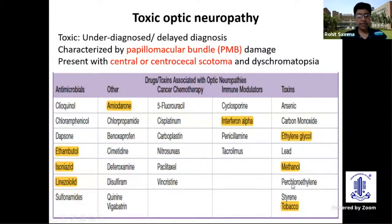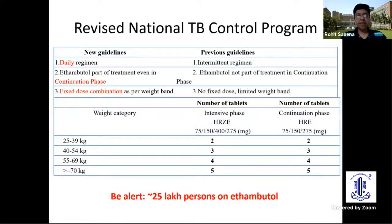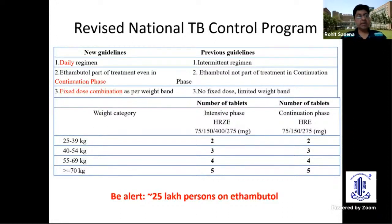The other important one is, of course, alcohol-induced, which I'll just touch upon, but mainly I'll be talking about tuberculosis-related. This has become important because we've recently had the revised national TB control program where the guidelines have changed and it's now a daily regimen. Ethambutol is also a part of the continuation phase. There are fixed dose combinations as per the weight band, and although the weight band tends to decrease the risks, because they are in combination, stopping ethambutol also becomes rather difficult at times.